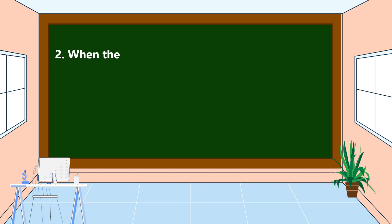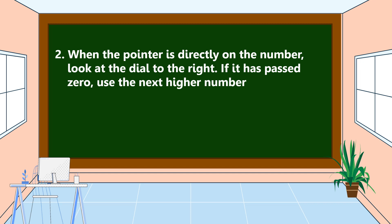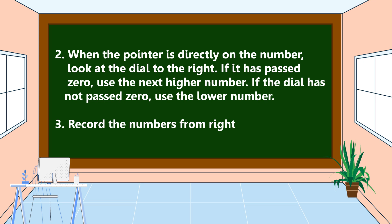The rules for reading a water meter are: Number one, when the pointer is between two numbers, the lower number is recorded. Number two, when the pointer is directly on a number, look at the dial to the right — if it has passed zero, use the next higher number; if it has not passed zero, use the lower number. Number three, record the numbers from right to left.